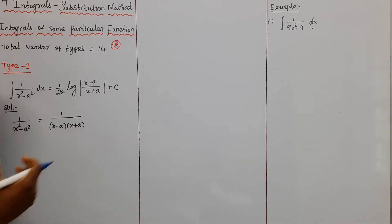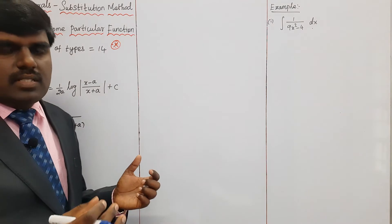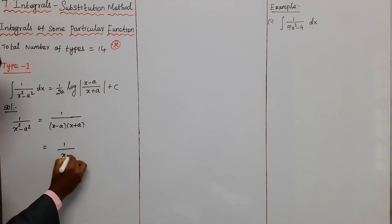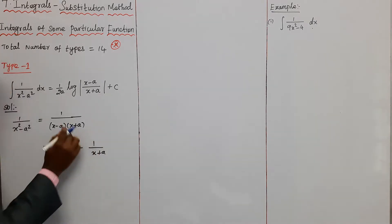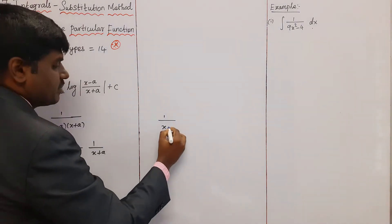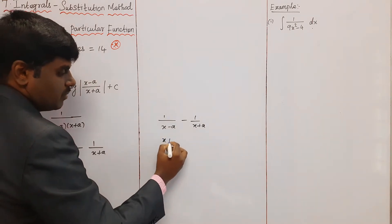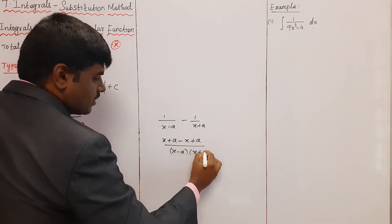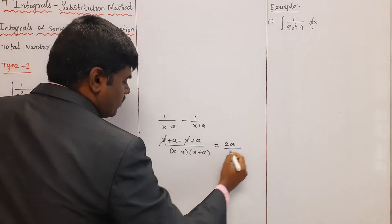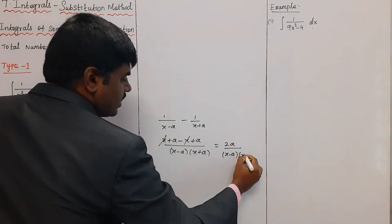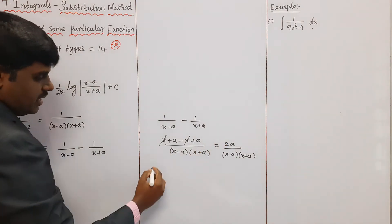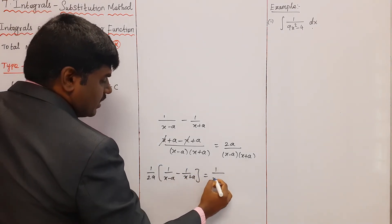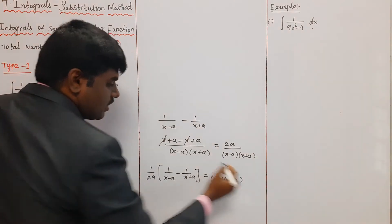Since both terms are multiplied, we use partial fractions. I will split 1 by (x - a)(x + a) into the form [1 by (x - a) minus 1 by (x + a)]. Taking the cross multiple: (x + a) minus (x + a) over (x - a)(x + a), the x terms cancel, leaving 2a. So the value is (1/2a) times [1/(x - a) minus 1/(x + a)].